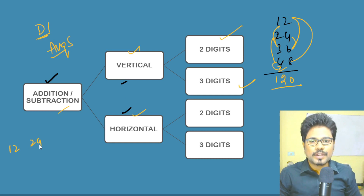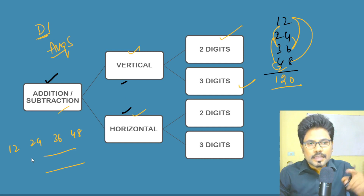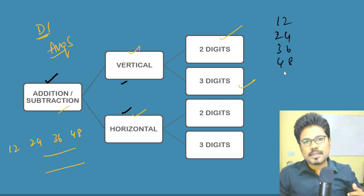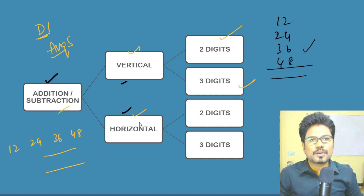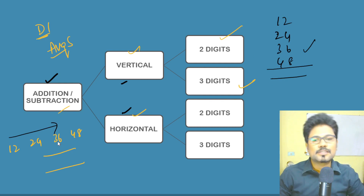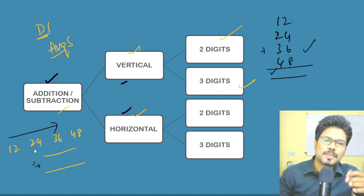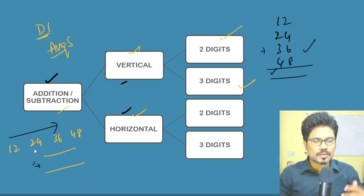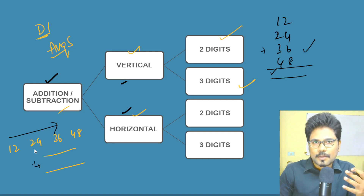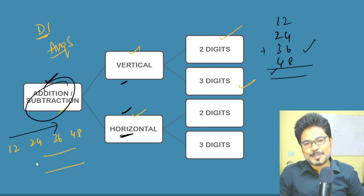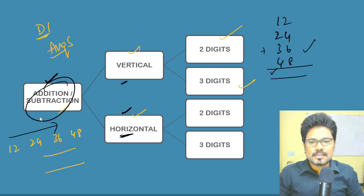With 12, 24, 36, 48 — the examiner will play with your mind. The same question, if asked vertically in a DI format versus horizontally, will take you a minimum of four to five seconds more. That is the practical approach we need to follow. So I am going to teach horizontal addition and subtraction techniques in the later video sessions.